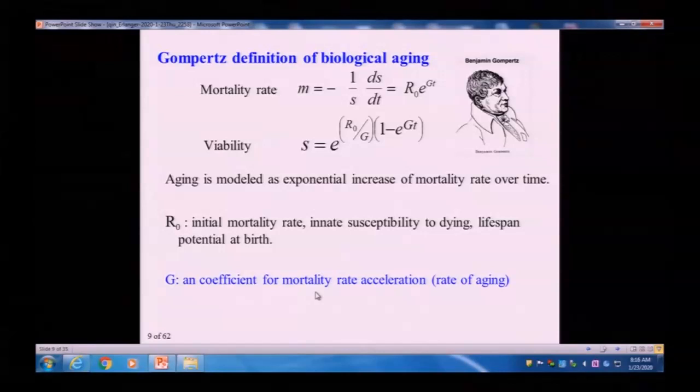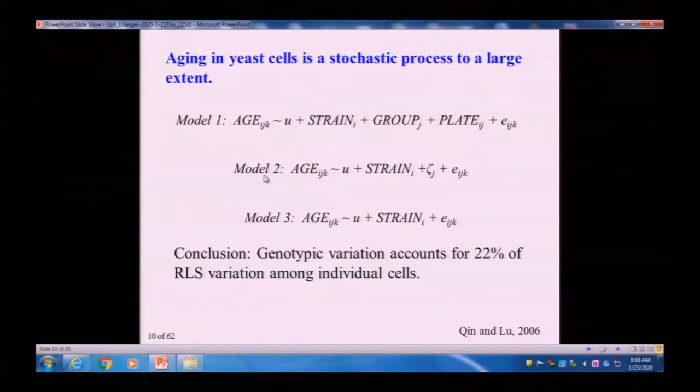This parameter G, because the exponential component has no unit, that means the G must have a unit of 1 over time. Or then, that by definition, that's the rate of speed. Something divided by time, that means how fast is the change. So, we actually call that mortality rate, rate of aging, because it describes how fast our chance of dying increasing over time. If G is 0, that means then our chance of dying will be a constant. That would be wonderful. If our chance of going down, that would be even better. That means we can regenerate ourselves.